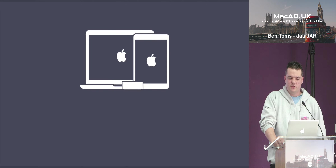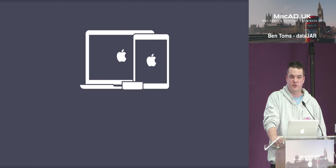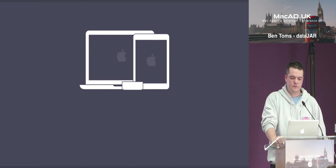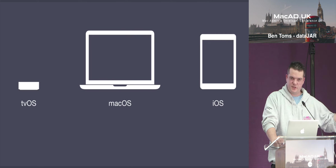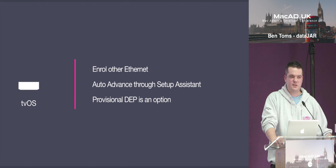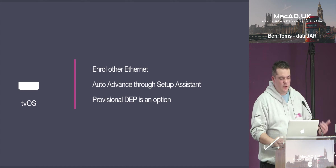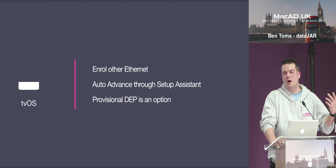One thing to mention about device enrollment: it happens when a device is activated through the Setup Assistant. If you've got macOS or iOS devices already deployed, you'll want to wipe them to bring them into device enrollment — you can fudge it a bit on macOS, but really just wipe them. There are three OS types to look at briefly: tvOS, macOS, and iOS. tvOS is the simplest: once you've got everything built, plug in ethernet and power, turn the device on and it will auto-advance through setup — a true zero-touch experience. You can use provisional DEP to bring a device in if it's running tvOS 10.2 or later.